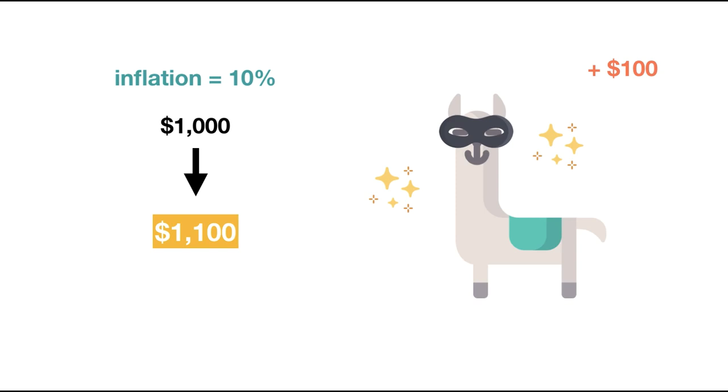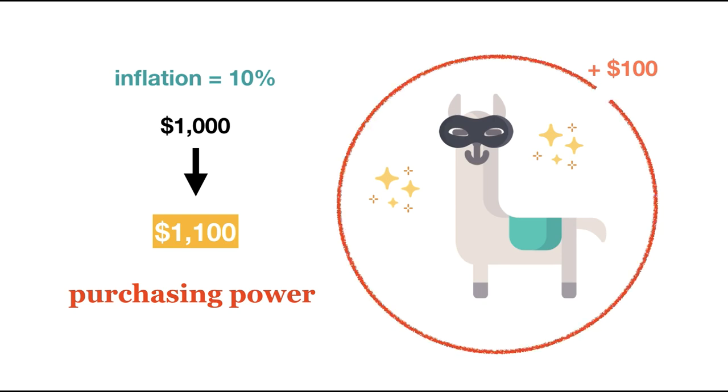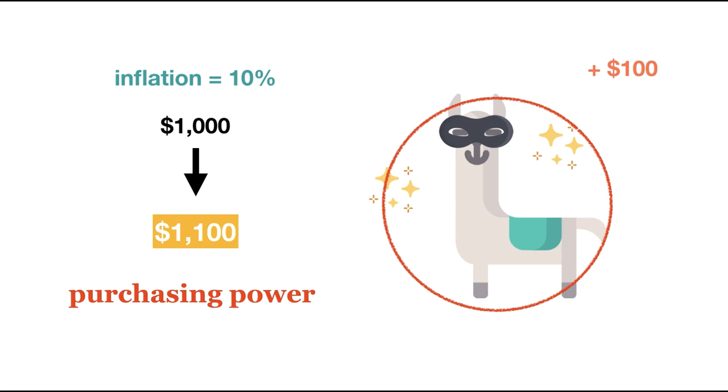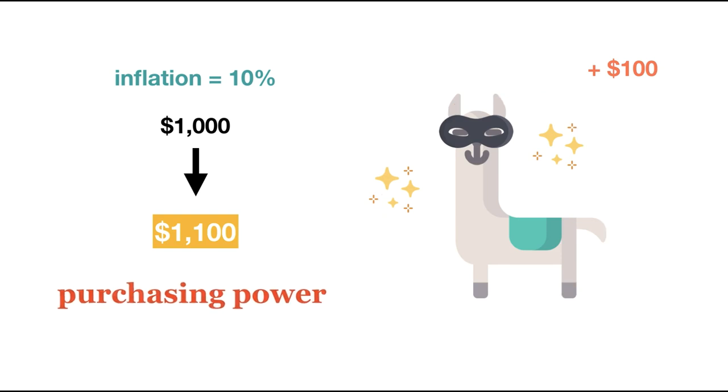What this means is that the true value of my $1,000, that is, my purchasing power, has decreased. My $1,000 can buy me a whole llama this year, but only 91% of a llama next year. In other words, I can buy fewer goods with my $1,000 than I could have before.